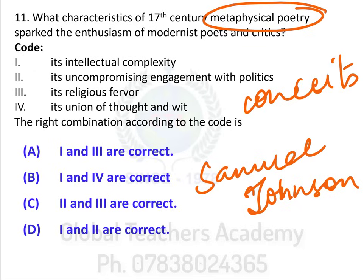The options: 1 — intellectual complexity, 2 — its uncompromising engagement with politics, 3 — its religious fervor, 4 — its union of thought and wit. The right combination according to the code: A — 1 and 3, B — 1 and 4, C — 2 and 3, D — (not stated). Metaphysical conceits involved a lot of scientific things combined with unusual objects, along with a large amount of wit. So the option is 1 and 4 — intellectual complexity and its union of thought and wit — making your answer option B.